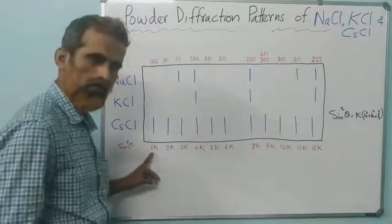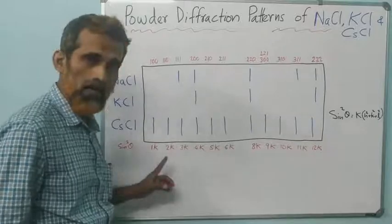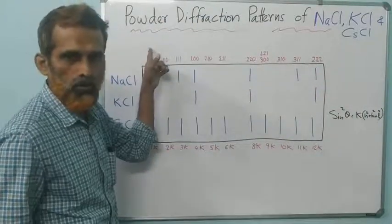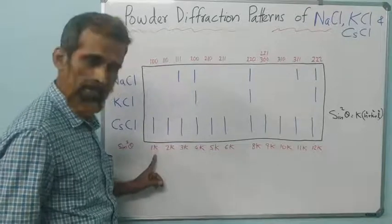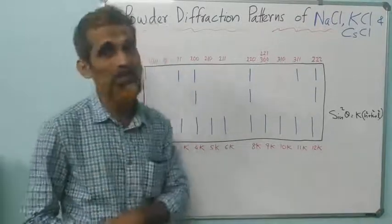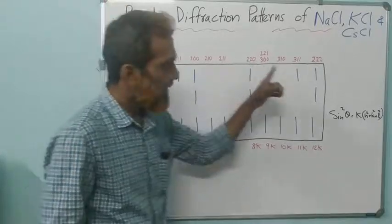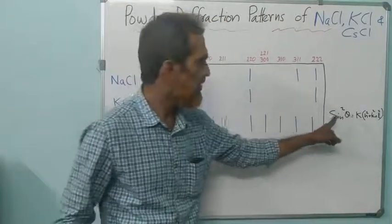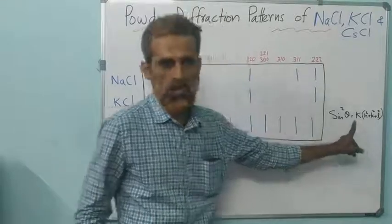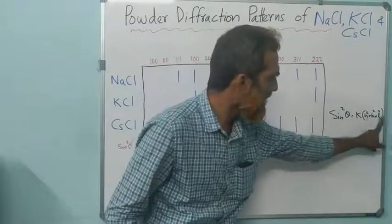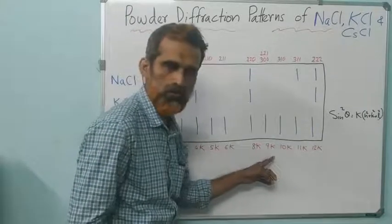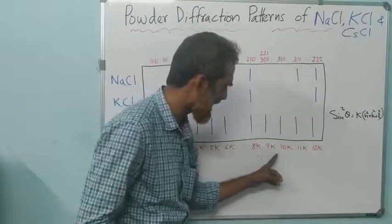Accordingly, we have various values for sin²θ. Giving all possible values for hkl — corresponding to the 100 plane you have 1k, 2k, 4k, and so on. Note there is no 7k because you cannot get 7k by putting any value for hkl. It continues from 8k, 9k, etc.